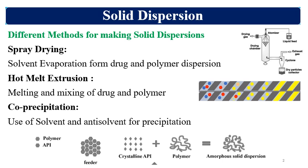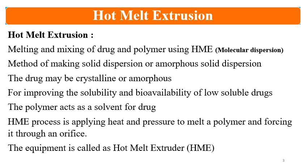Co-precipitation involves the use of a solvent and anti-solvent for controlled precipitation. Whatever method is applied — spray-drying, HME, or co-precipitation — we use the API and the polymer. The API may be crystalline or amorphous, and after processing we obtain the solid dispersion. HME is one such method, involving melting and mixing of the drug and polymer using HME equipment, resulting in molecular-level dispersion.